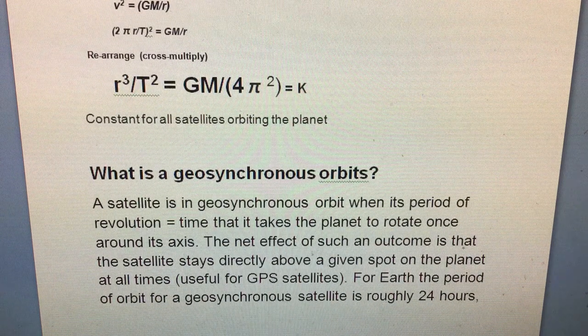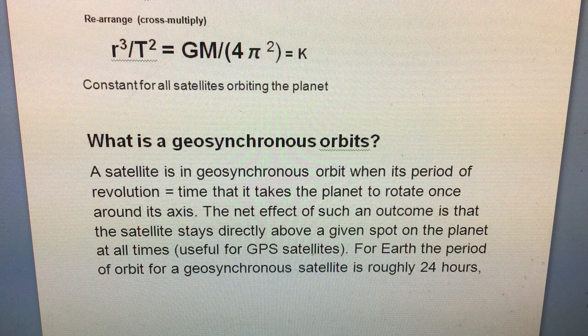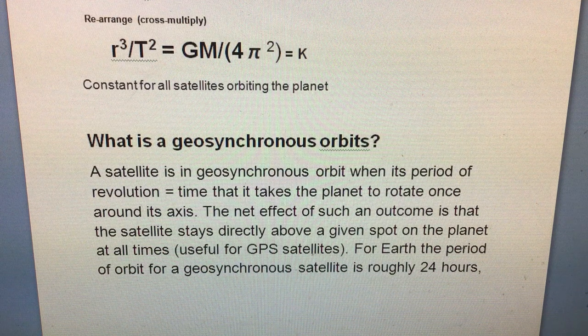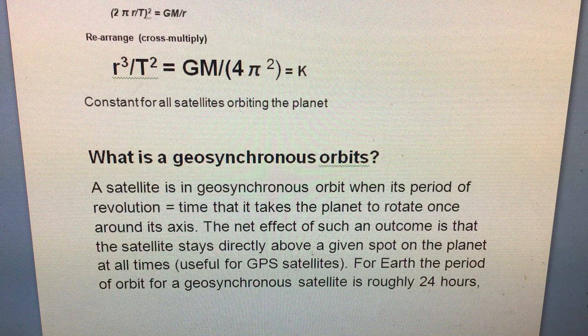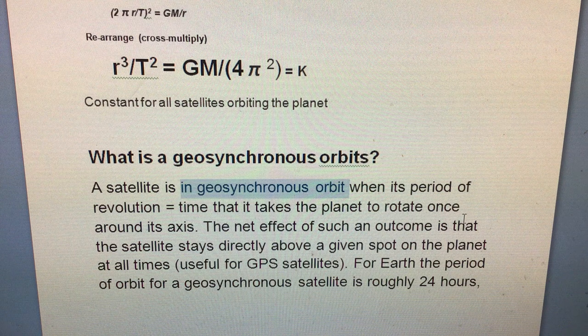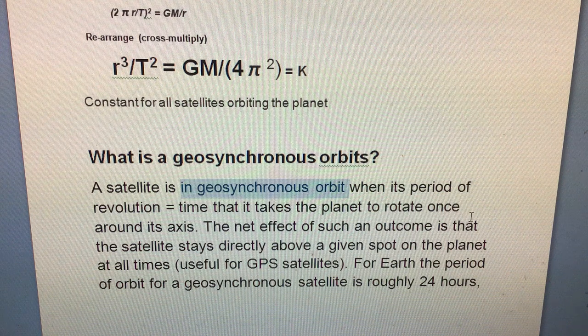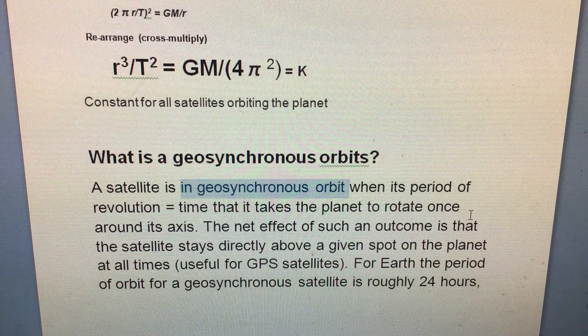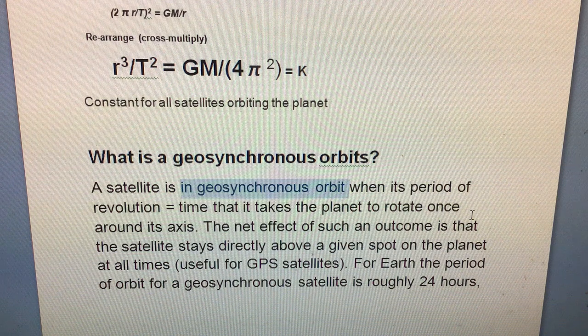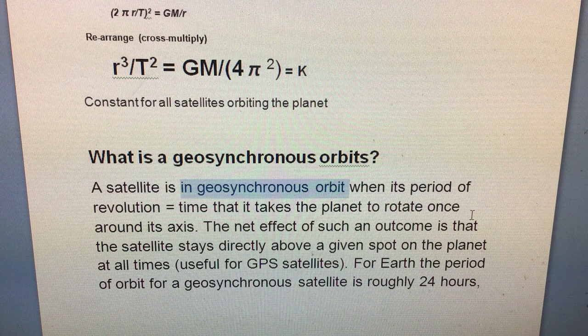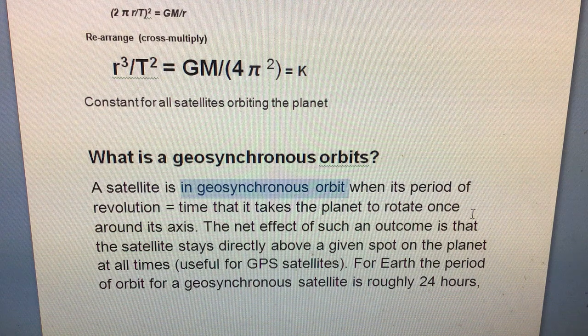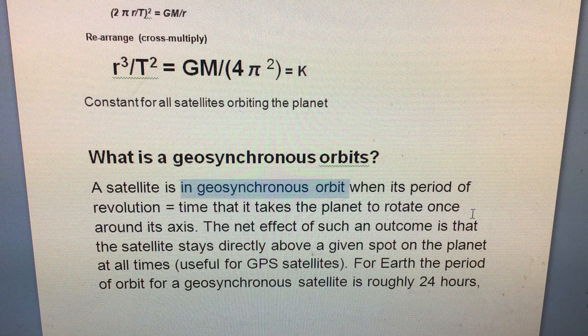One last thing before we end this video is the idea of the geosynchronous satellite. Sometimes we can place a satellite in geosynchronous orbit, and this is neat because what it means is that the period of revolution - in other words, the time that it takes the satellite to go around once around the planet - is equal to the time that it takes the planet to rotate once around its axis. So in the case of Earth, this would be 24 hours.